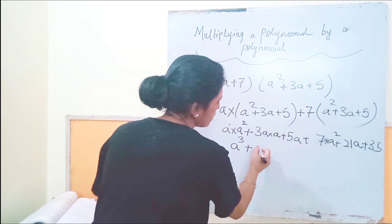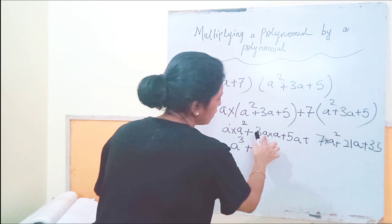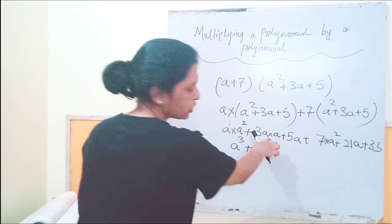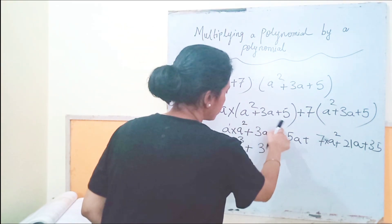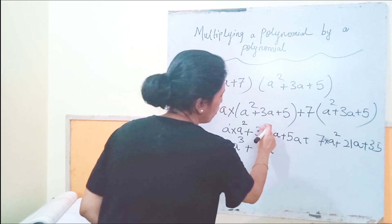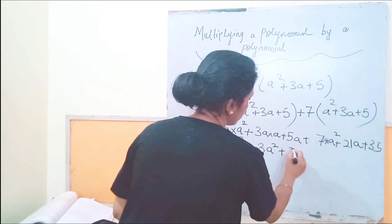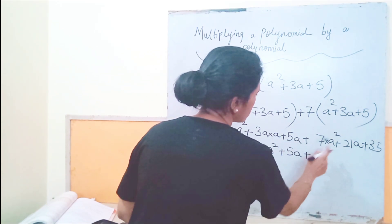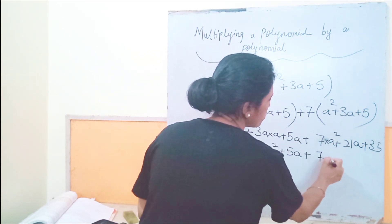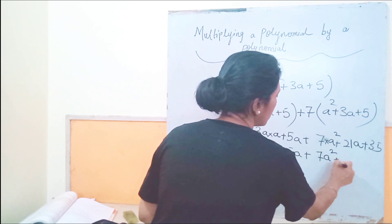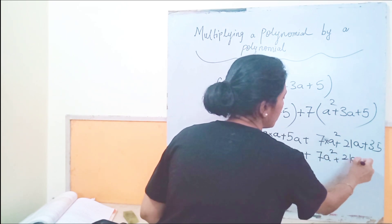Here 1 is there, so 3 runs up 3. And the bases are same, the multiplication operation is there, so the powers will get added. So 1 plus 1, it will become 2. Plus 5 into a will be 5a, plus 7 into a squared is 7a squared, plus 21a plus 35.